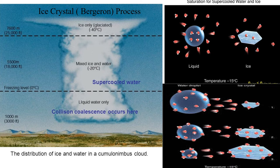Even at higher levels where the air temperature is minus 10 degrees centigrade, there is only one ice crystal for every million liquid droplets. So although the temperature is lower, ice crystals still didn't form — near 5,500 meters above the ground where the temperature became somewhere like minus 20 degrees centigrade, ice crystals become more available, more in number.